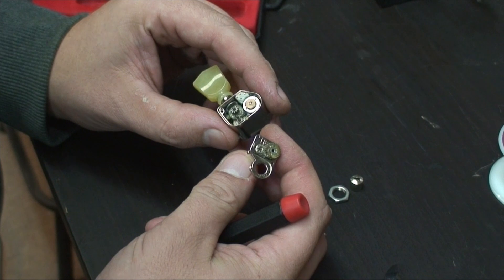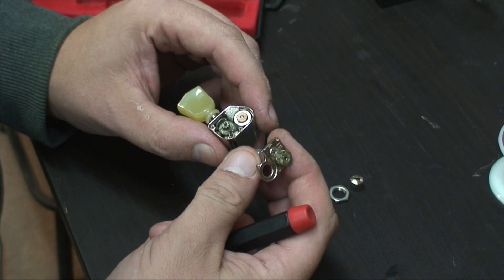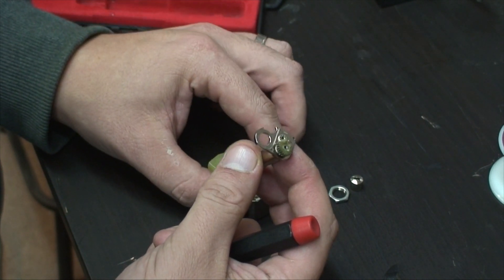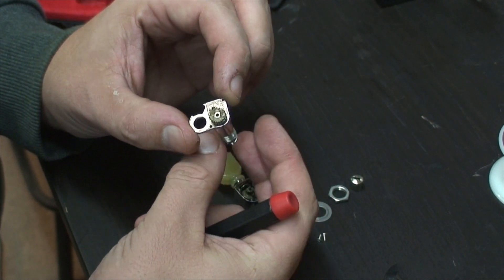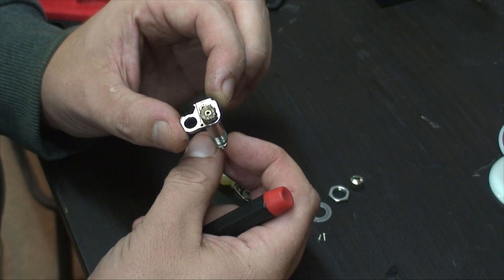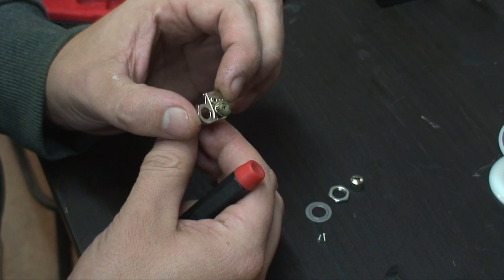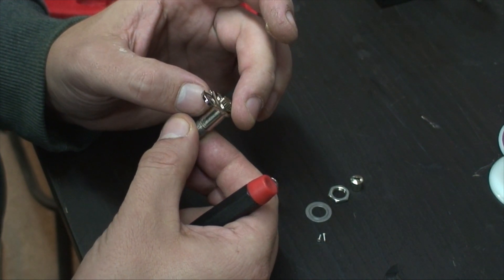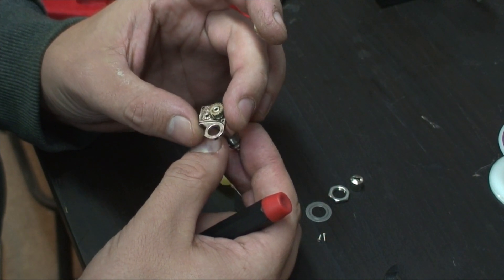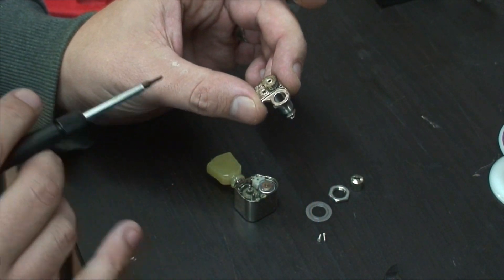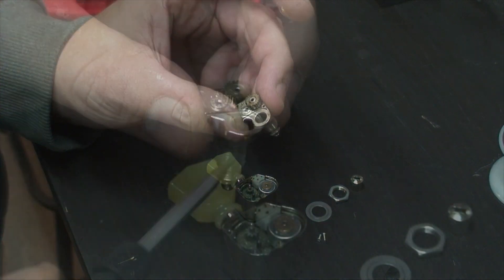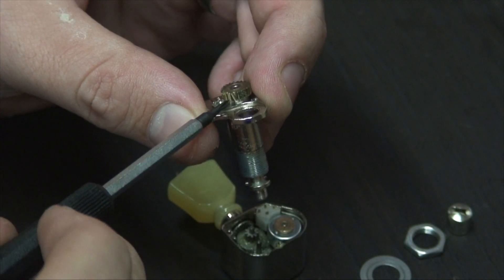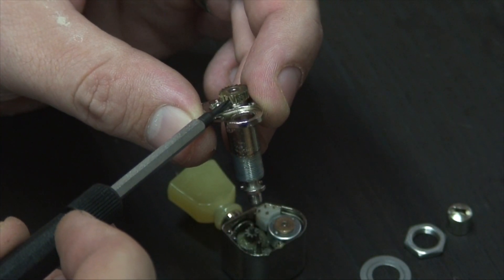All right, so she's packed full of grease. See if I can see any obvious, oh there it is, there's the broken tooth. See it already? There's the broken tooth right there. That's what's causing it to slip.